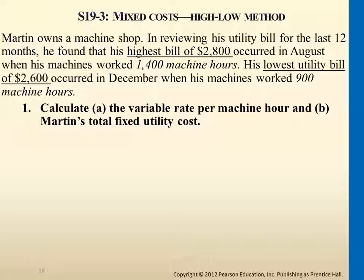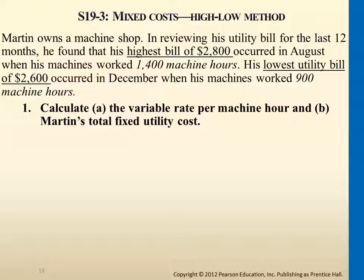So this 0.4 means that per hour of using the machinery equipment, we incur the utility bill at $0.40, or 40 cents. That's step one — we got 0.4. For step two, we multiply by any data point. Let's choose 1,400 hours. 1,400 hours multiplied by the rate 0.4 gives us 560. This is the variable cost. The total cost we know is $2,800, and the variable cost is $560, so the fixed portion is $2,240.